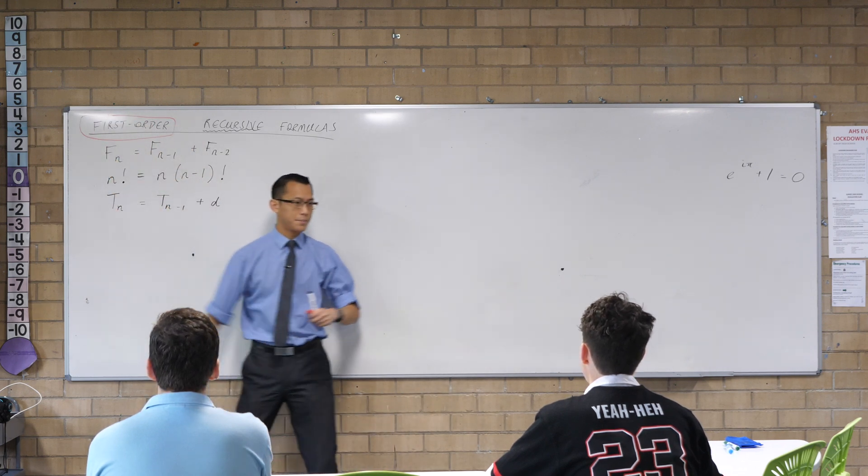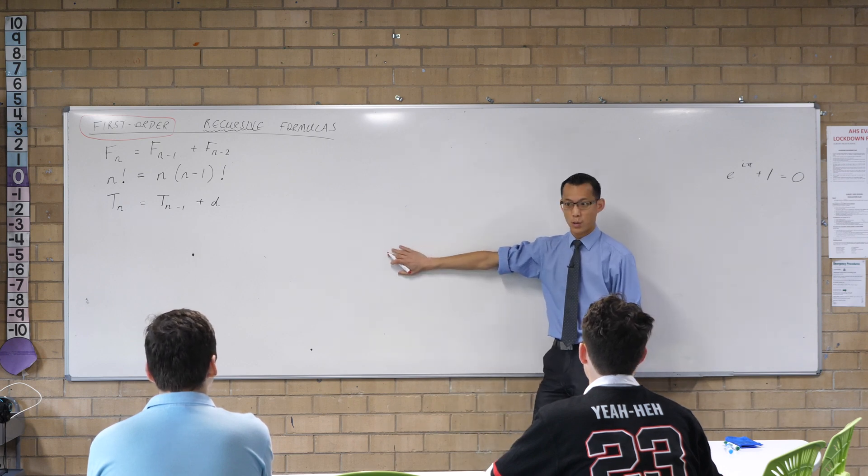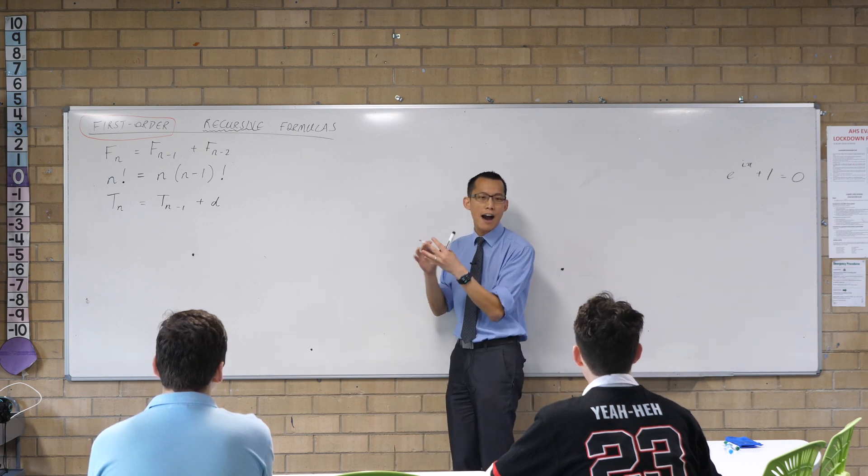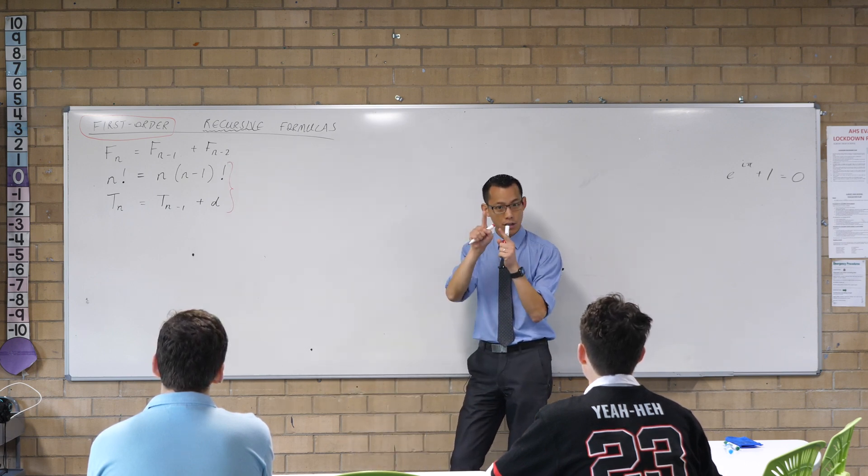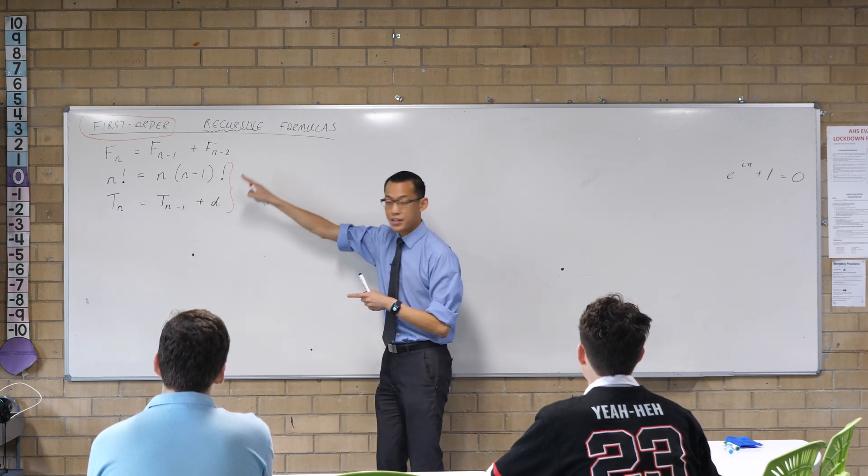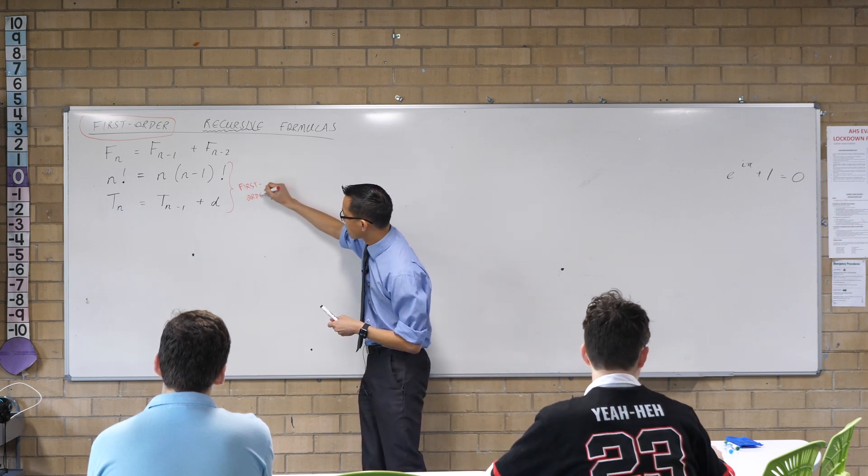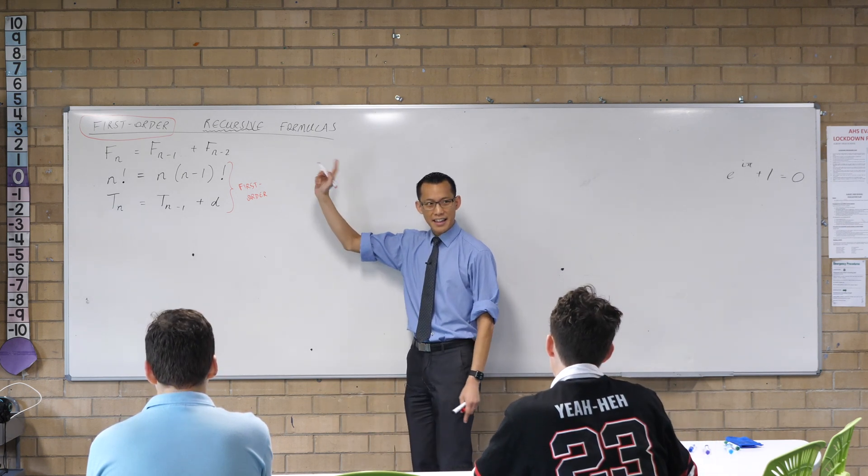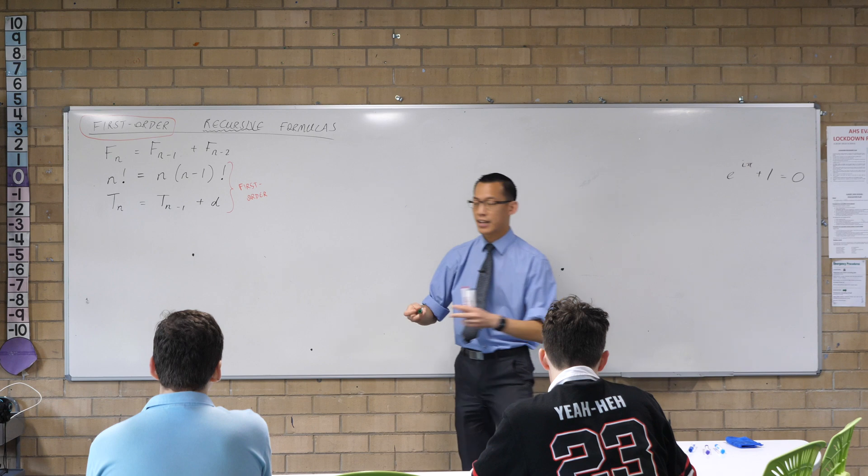Okay, other color. Now we can understand what this part means. First order. These are all recursive formulas here, but two of them are first order, and the other one is not. The whole idea is, how complicated is this? How far do I have to go back? So do you notice, for these two formulas, you only have to go one step back, N minus one, N minus one. So for each of these, we would call them first order because you only need to know the previous one term. The Fibonacci sequence, though, because you have to go two back, we would call that second order.